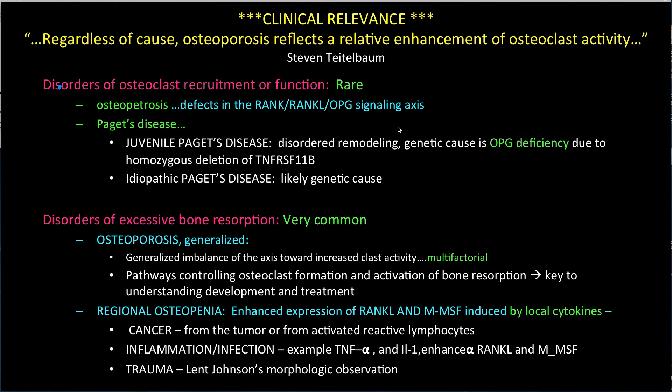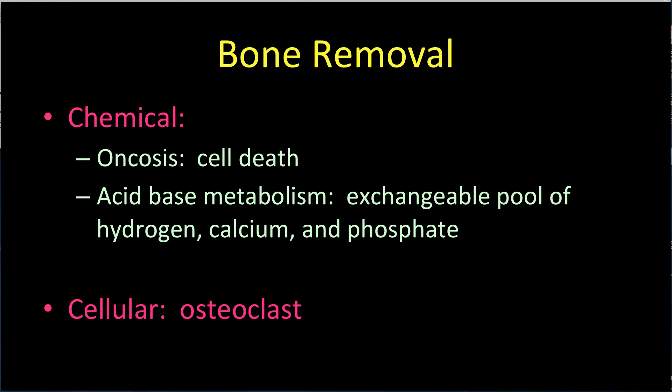Treatment approaches of osteoporosis are now focused on modalities to modify the RANKL-OPG signaling axis. Bone removal is either chemical or cellular. The osteoclast is the only cell removing bone. Beyond this, chemical bone removal can be one of two types. First is onchosis.